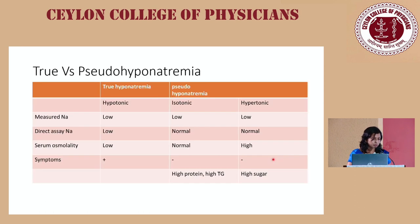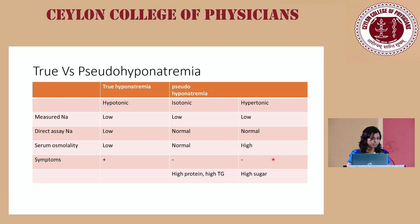This table shows how to differentiate true hyponatremia from pseudohyponatremia. When you measure sodium, values are low in both instances. But on direct assay like ABG, sodium is low in true hyponatremia but normal in pseudohyponatremia. Serum osmolality is low in true hyponatremia but normal or high in pseudohyponatremia. True hyponatremic patients are almost always symptomatic, while pseudohyponatremic patients are asymptomatic.